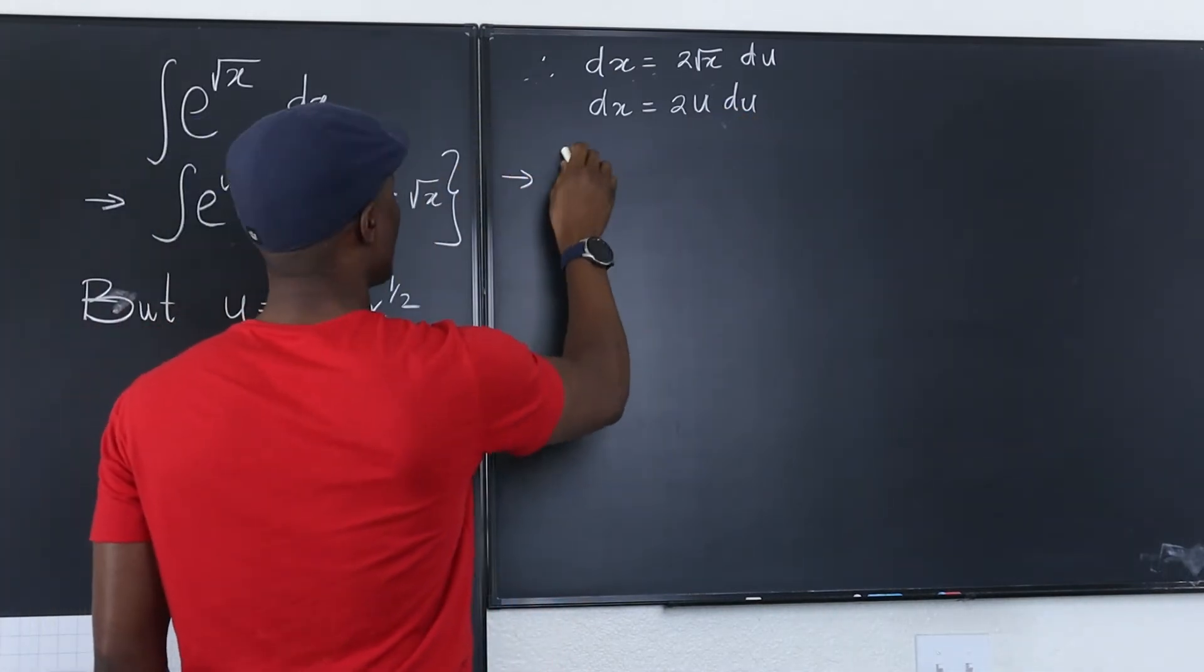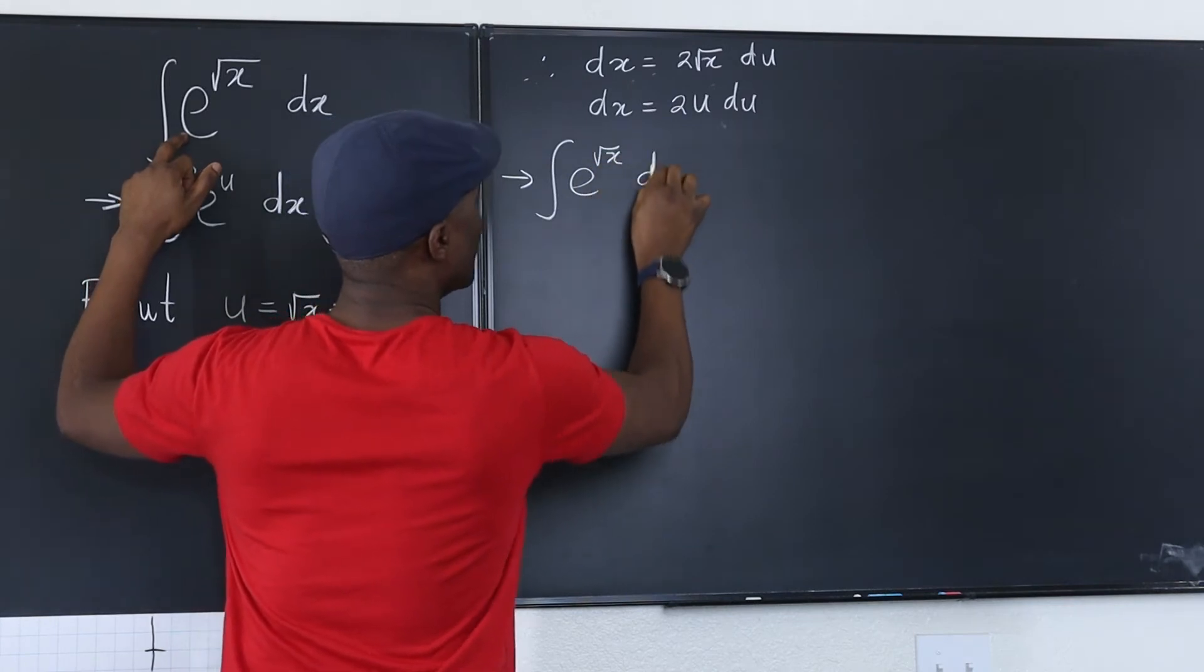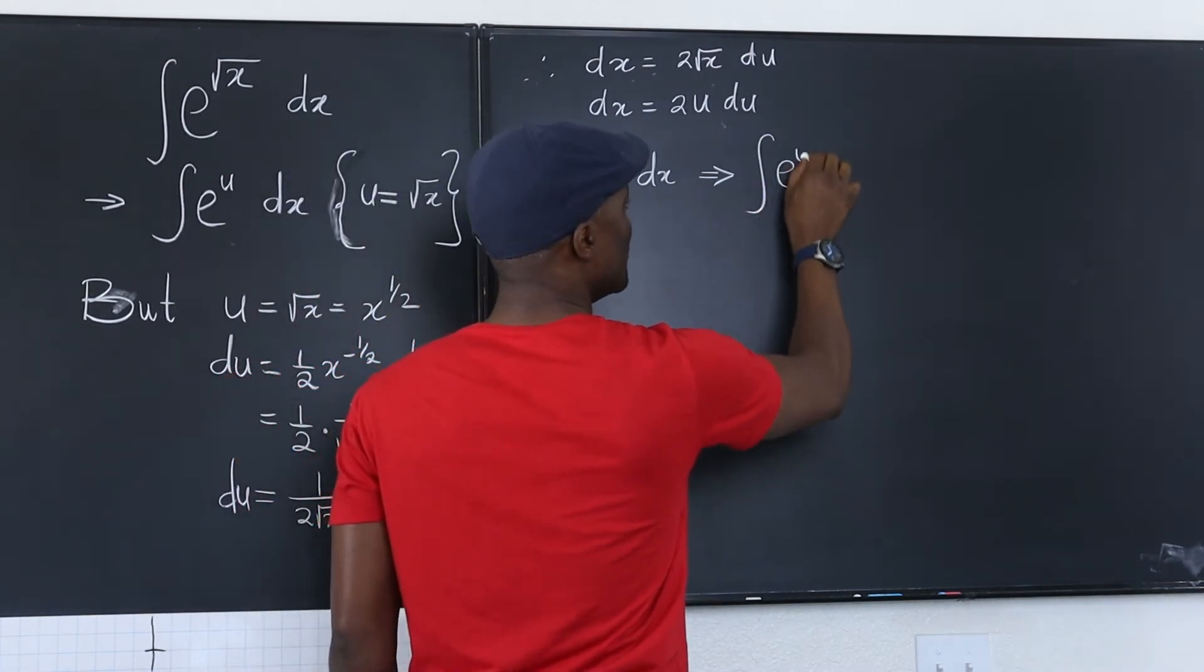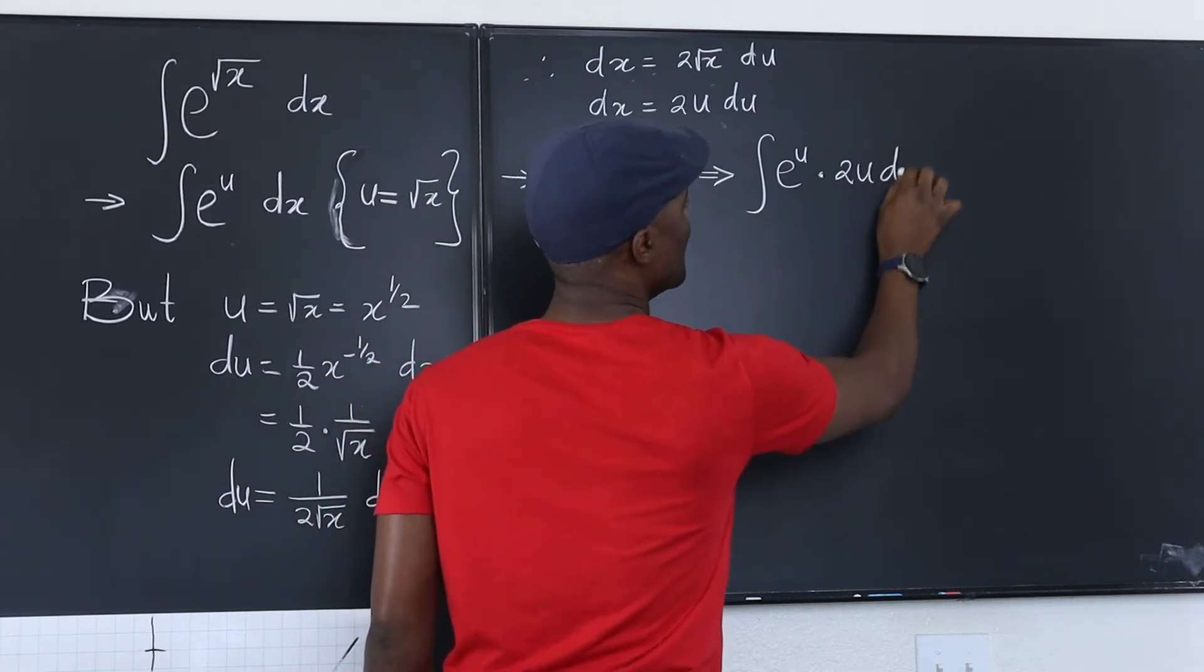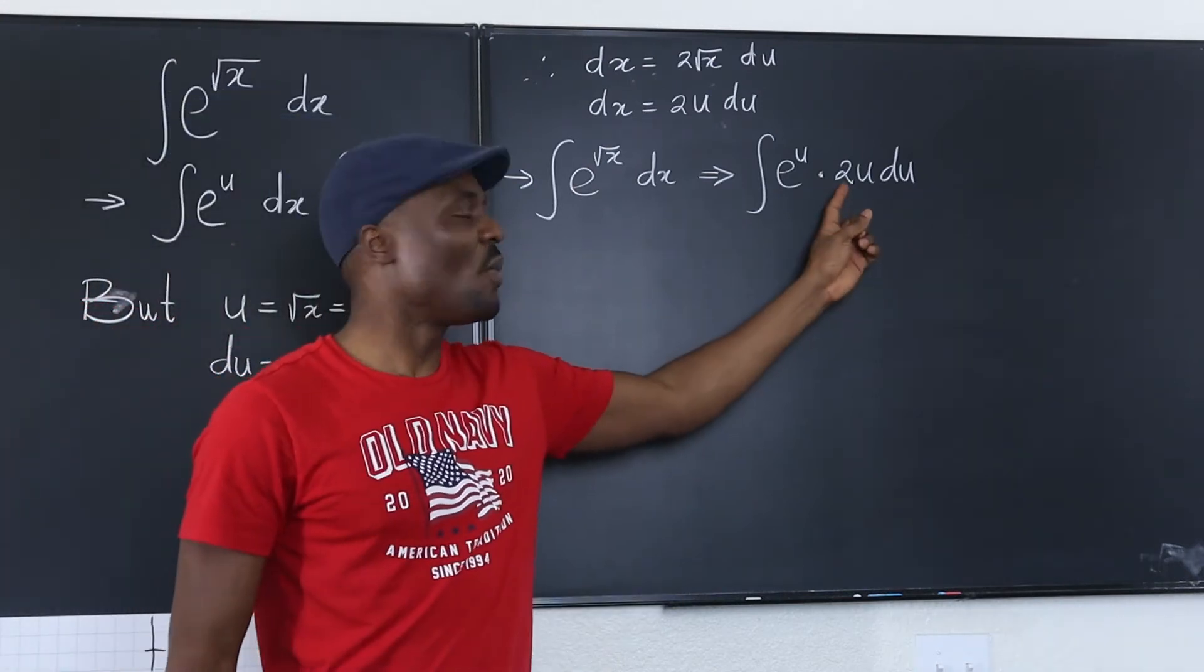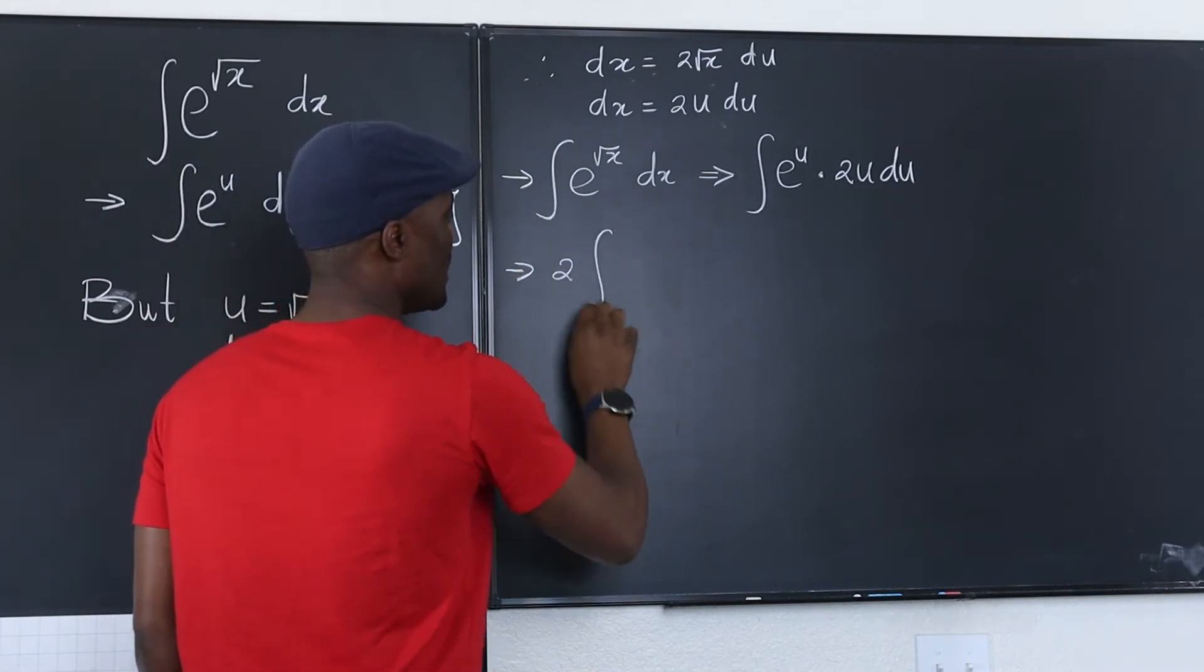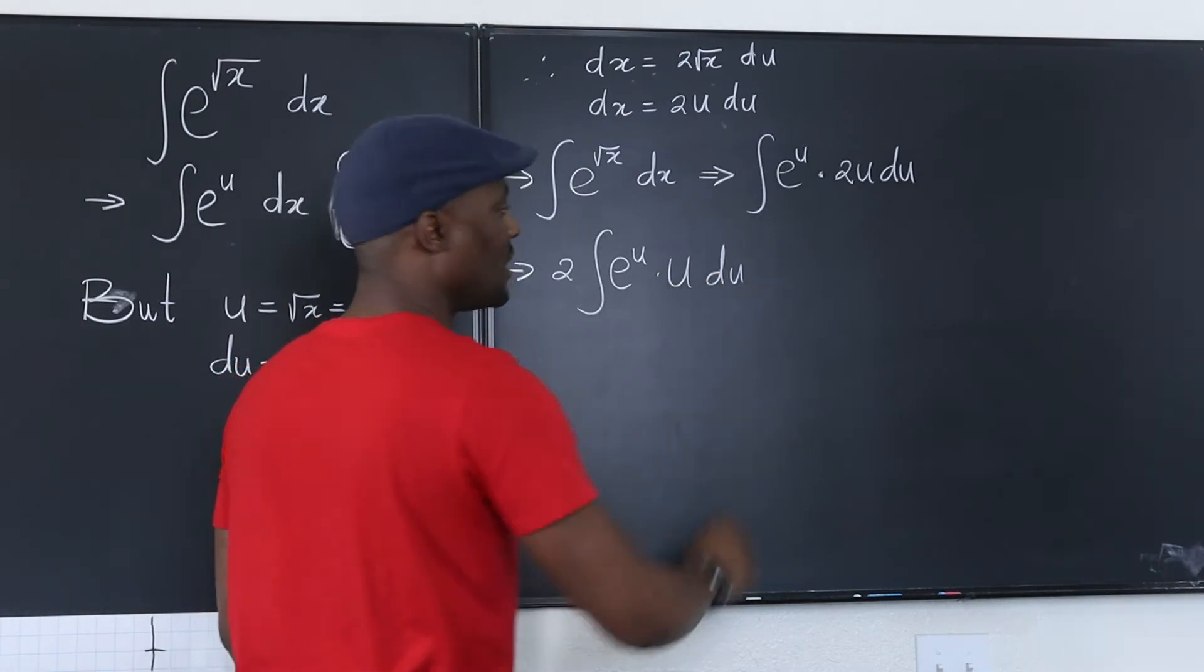So the integral of e to the square root of x dx is the same thing as if we had written e to the u multiplied by 2u du. Now we can take care of this. Take the constant to the back of the integral sign. This implies 2 integral e to the u times u du.